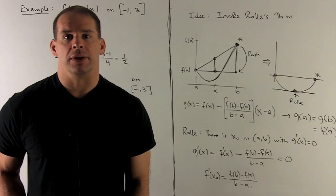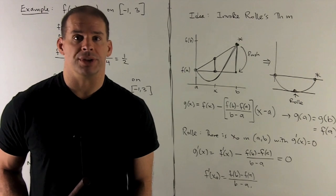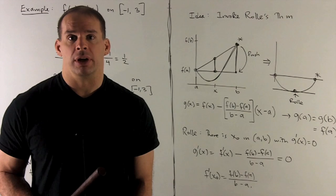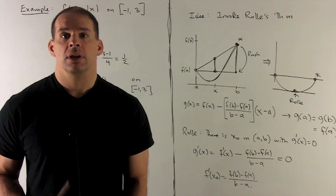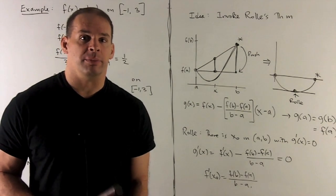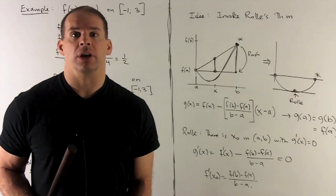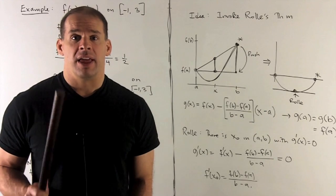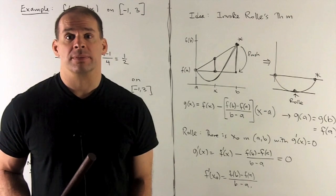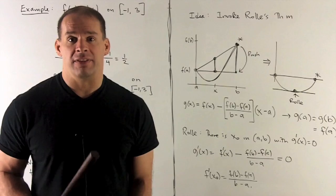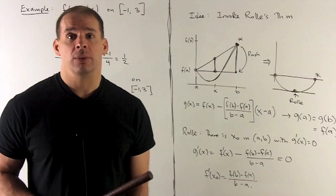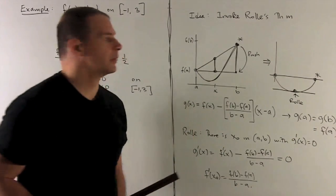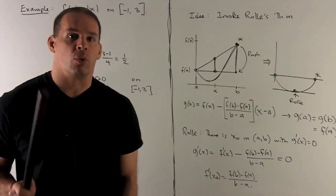Let's see why the Mean Value Theorem is true. The key step is Rolle's theorem. If f(a) = f(b), then Rolle's theorem kicks in and there's nothing to prove, so we assume f(a) and f(b) are not equal. Drawing a picture: we mark off a and b on the x-axis, f(a) and f(b) on the y-axis, and since they're not equal we can draw the right triangle that comes off of the secant line. To invoke Rolle's theorem we need a function g.